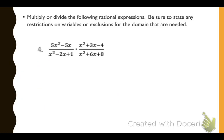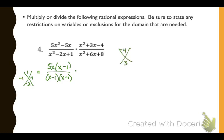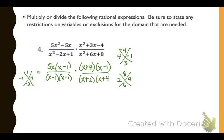Number 4: we factor each part and then multiply. We factor out a common factor of 5x in the first numerator. Then we look for numbers that multiply to give us 1 and combine to give us negative 2, giving us x minus 1 times x minus 1. For the right numerator, numbers that multiply to give us 4 and add to give us 3 — that's 4 and negative 1. In the denominator, numbers that multiply to give us 8 and combine to give us 6 — that's 4 and 2. Everything divides out except 5x on top and x plus 2 in the denominator. The exclusions are 1, negative 2, and negative 4.